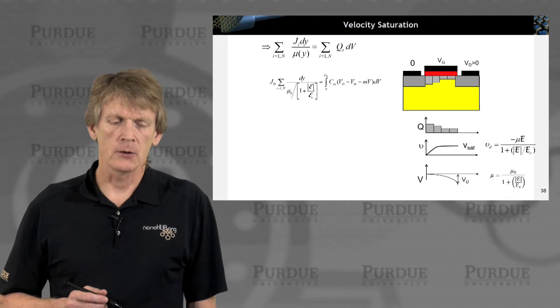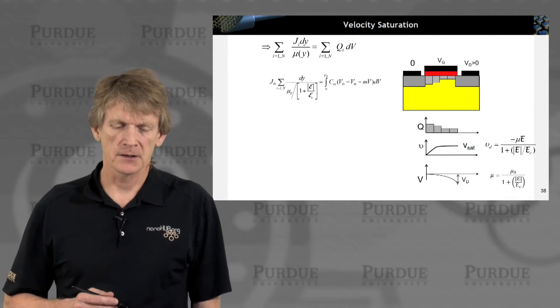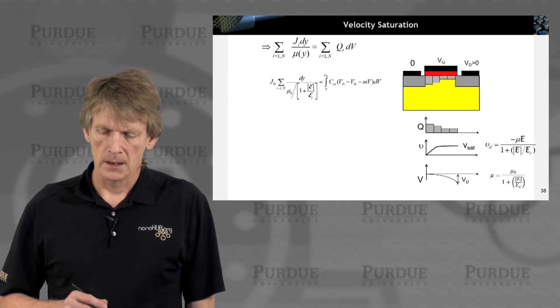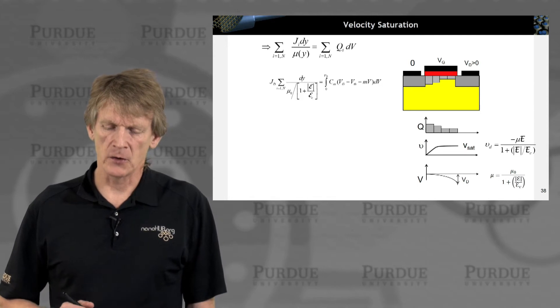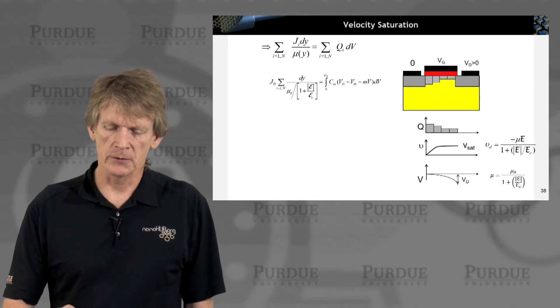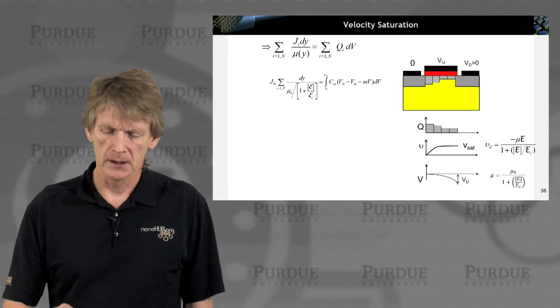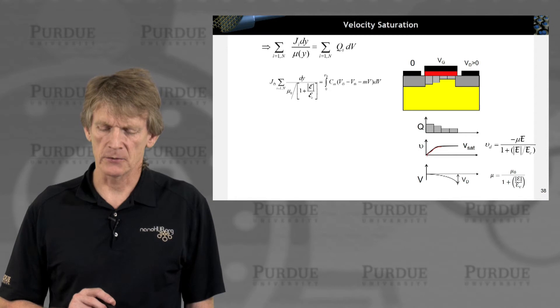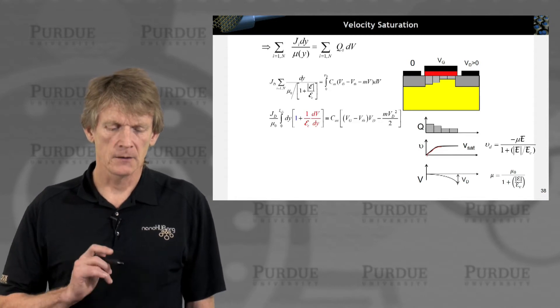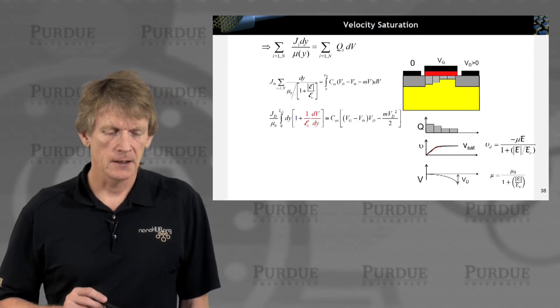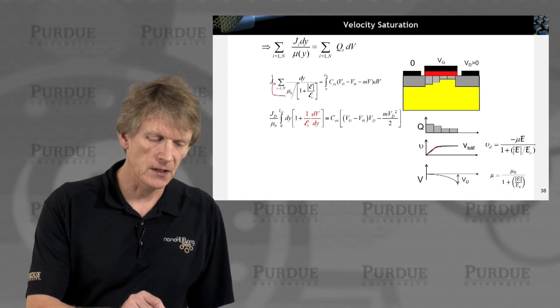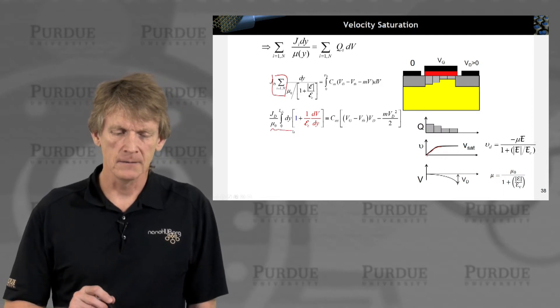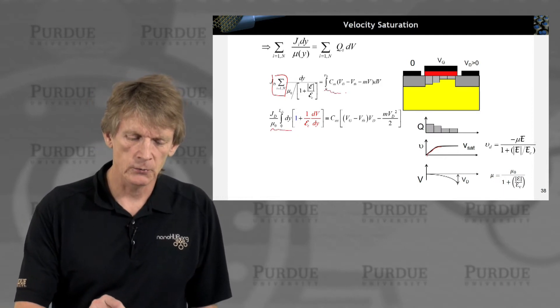We're now including the mobility expression explicitly in the sum and carry this calculation forward. So we have a charge distribution, we have a velocity distribution, and somewhere in the channel as a function of the potential we will saturate the mobility. So you can carry out this calculation and introduce, instead of the sum of discrete elements, we'll of course do the integral along the channel.